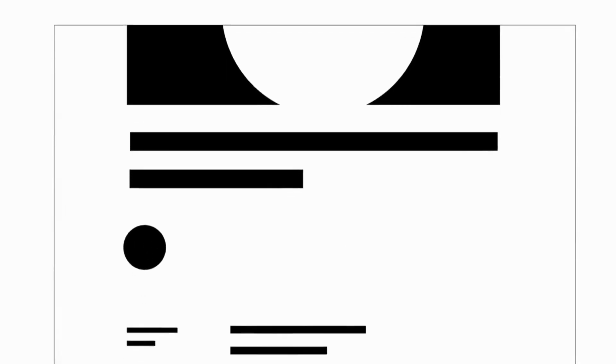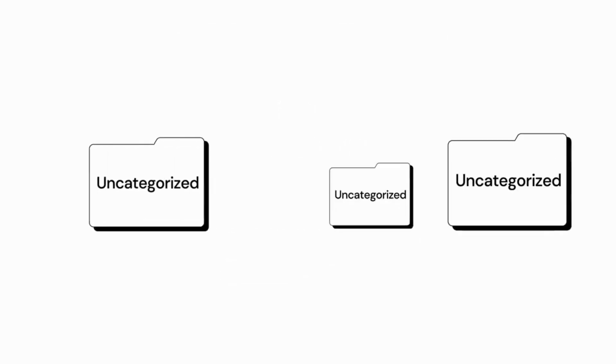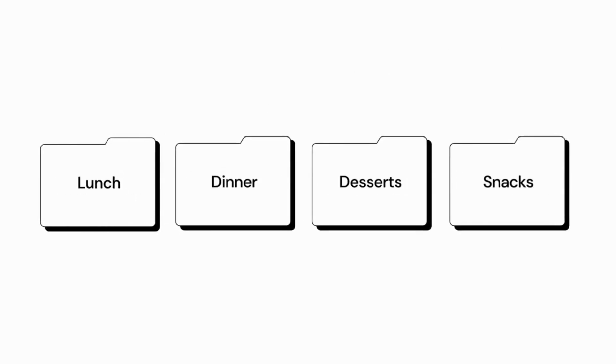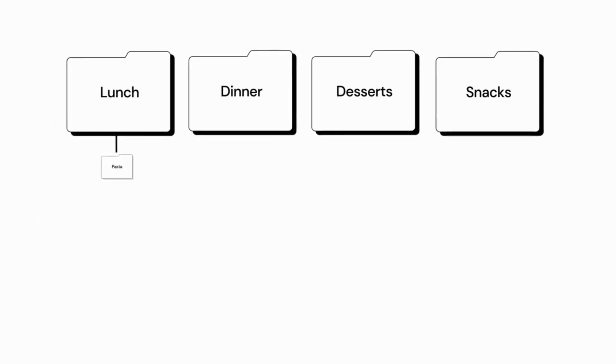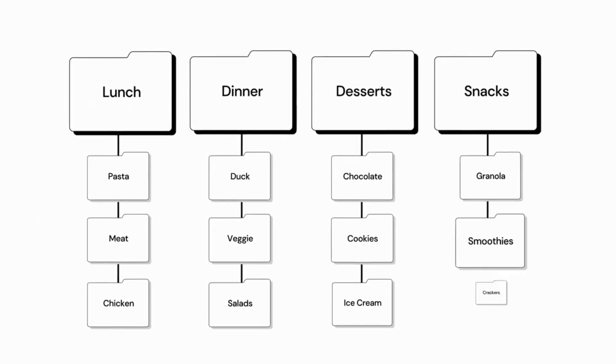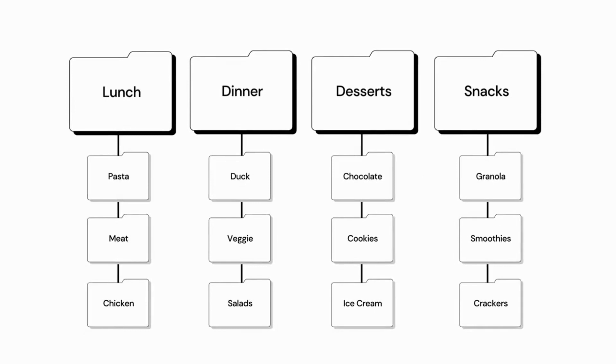Every post we create is assigned a specific category, with a default category called uncategorized. We can create new categories and rename them. Categories are hierarchical, and you can create subcategories. For example, if you have a blog about food, you can create a category for every type of meal, with subcategories for types of food like pasta, meat, and chicken. And we can add any category to our menu to facilitate easy navigation for our visitors.